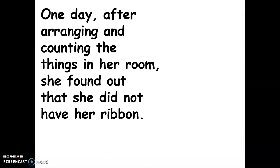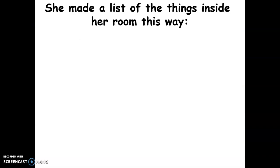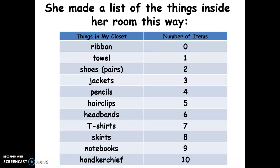One day, after arranging and counting the things in her room, she found out that she did not have her ribbon. Where could she possibly put her ribbon? To find out the things that she had in her room, she made a list of the things inside her room. These are the things in her room and the number of items she had. To have an idea of the number of things, let us visualize each of the items she listed.